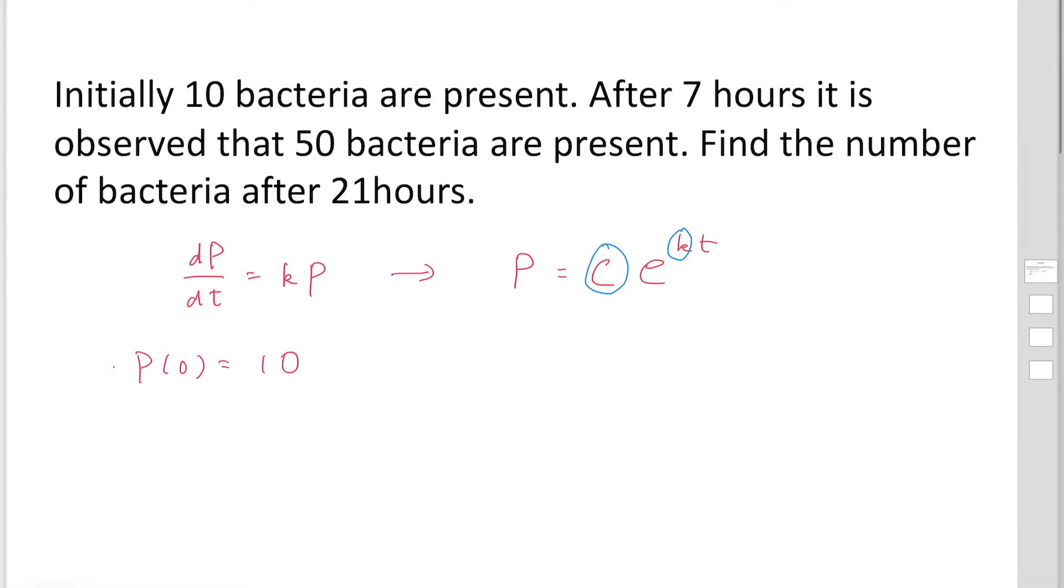Another information: after 7 hours, 50 bacteria are present. So P at t equals 7 is 50 bacteria. We have two conditions to determine C and k.